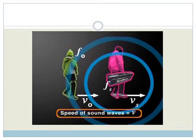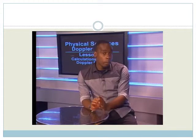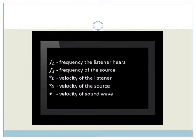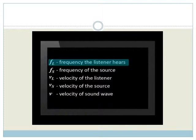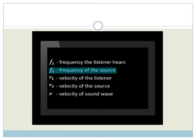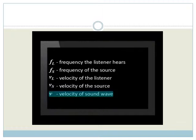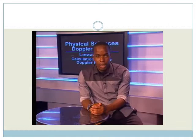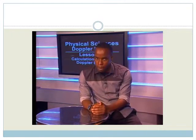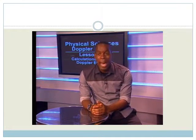We will use the symbol V for the speed of the sound waves. It's really important that you know what each symbol stands for. F subscript L is the frequency the listener hears; F subscript S is the frequency of the source of the sound wave; VL represents the velocity of the listener; VS represents the velocity of the source; and V stands for the velocity of the sound wave. Now that we know what each symbol in the equation represents, let us use the equation to solve problems. We will continue with Tabo's illustration and do a calculation.